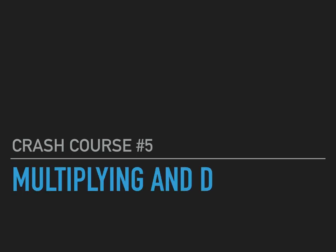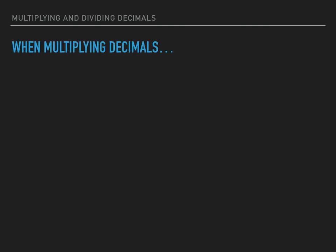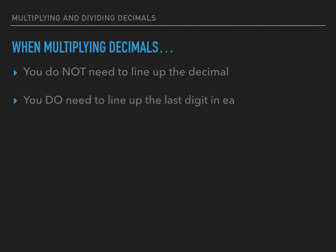Hello everyone and welcome to my latest crash course video. Today we're going to be talking about multiplying and dividing decimals. When we multiply decimals, as opposed to when we do addition and subtraction, we do not need to line up the actual decimal point in our problem. The thing that we do need to line up is the last digit in each of our factors.